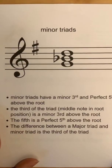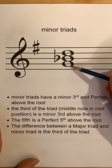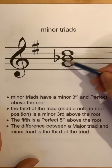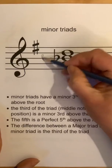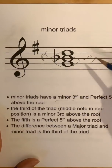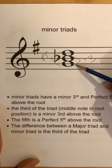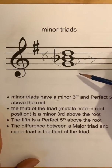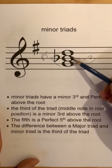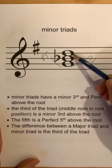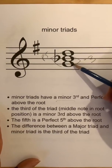A minor triad: this time I put a B flat there — a flat right in front of the B. So we still have G, B, D, but this is a B flat now. Minor triads have a minor third, but we still have the perfect fifth up here. The third of the triad — the middle one in root position — is a minor third above the root. The fifth is still a perfect fifth. So the difference between a major triad and a minor triad is this middle note, the third. The third is a half step lower, making it a minor third from the bottom note.